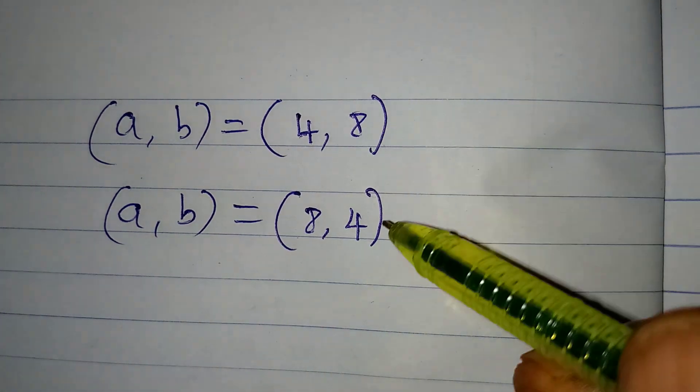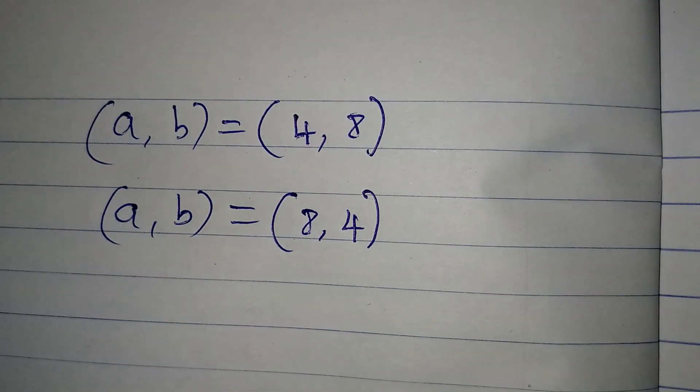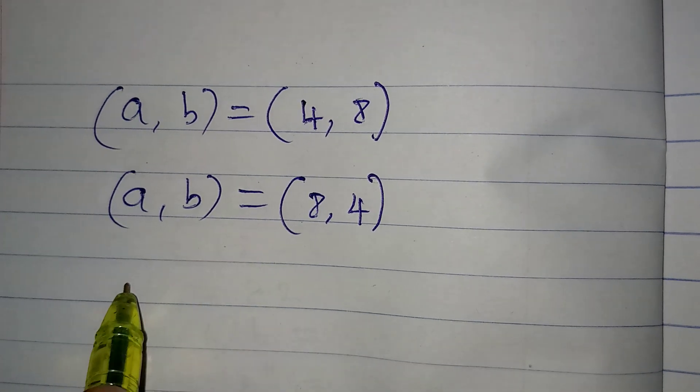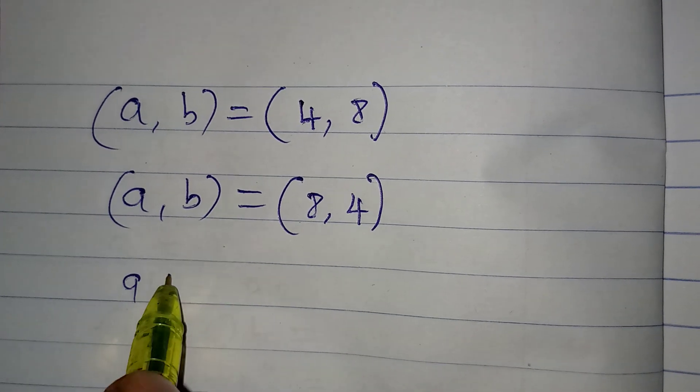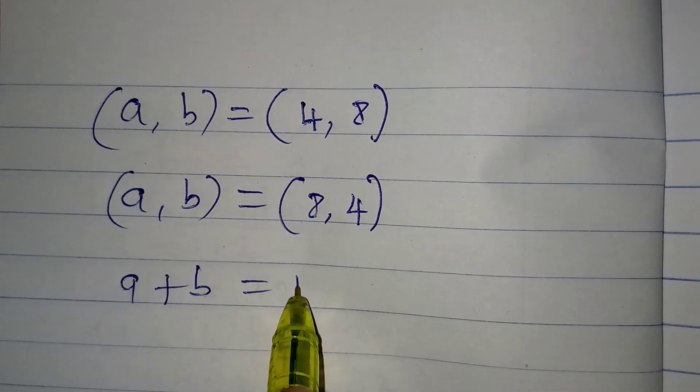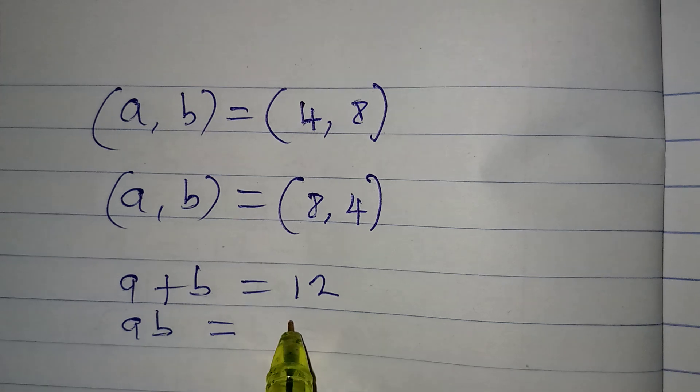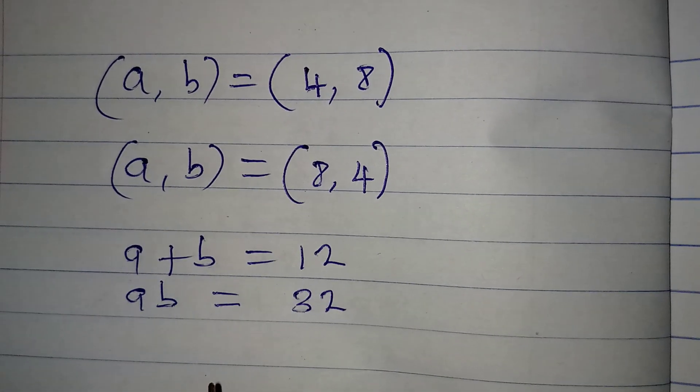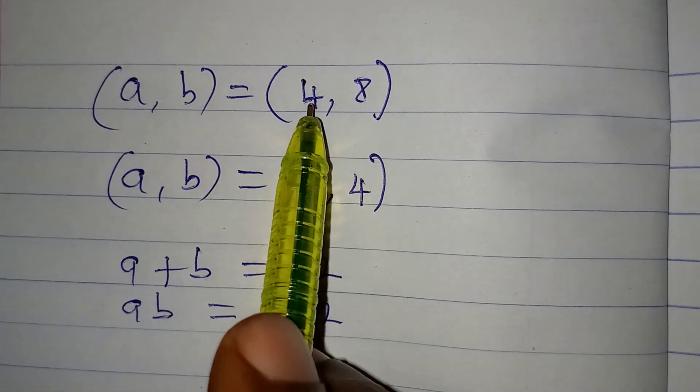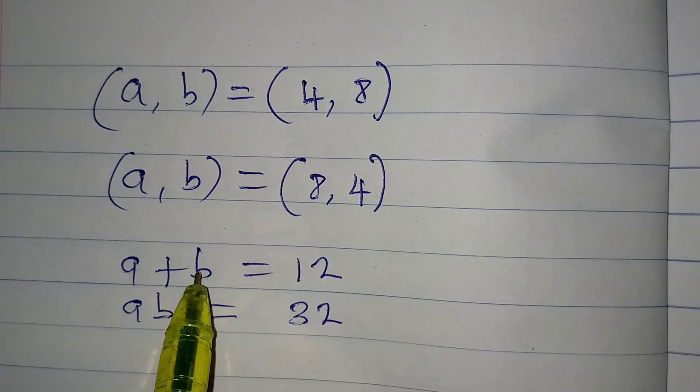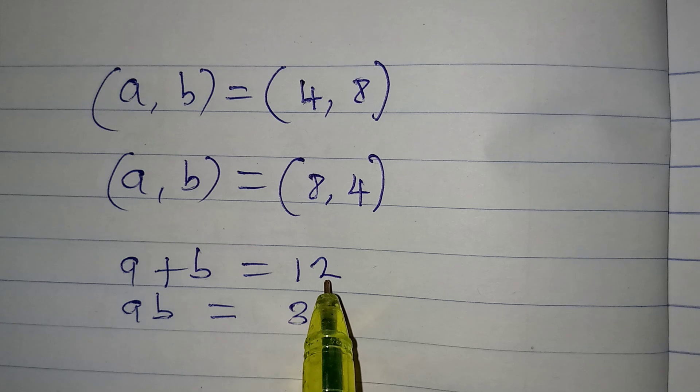But then, if you change it the way it is, both of them will still work perfectly well. Because the original equation was A plus B to be equal to 12, and then AB to be equal to 32. Now, if you put A to be 4 and B to be 8, it's going to be 4 plus 8, and that will give us 12.